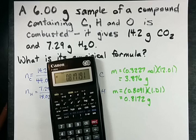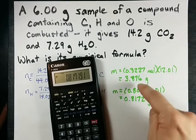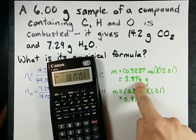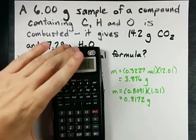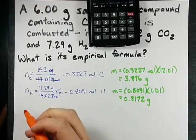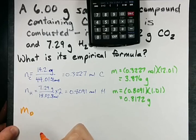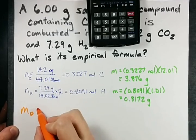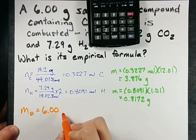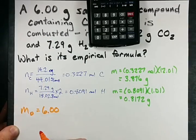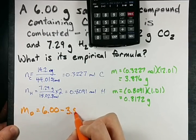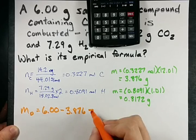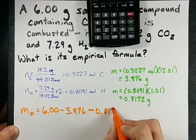Thus the mass of carbon is this, the mass of hydrogen is this, and the mass of oxygen in the original compound is the 6 gram sample that we started with minus all the carbon minus all the hydrogen.